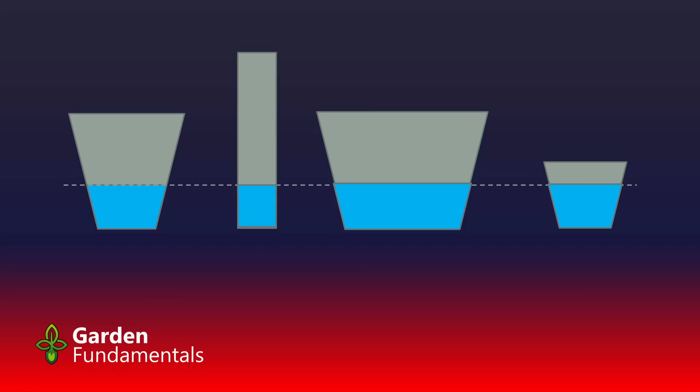In the next example over, we have a shallower pot, but it's really wide. And again, the height of the perched water table is exactly the same. And then finally, we have a very tiny pot. You'd think that a small pot would hold less water, and the perched water table would become smaller. But that's not what happens. The height of the perched water table is exactly the same in a small pot than a large pot.